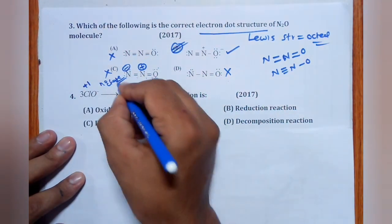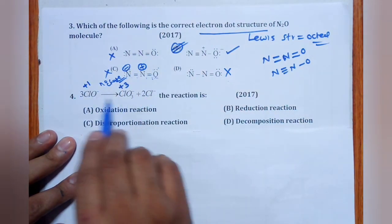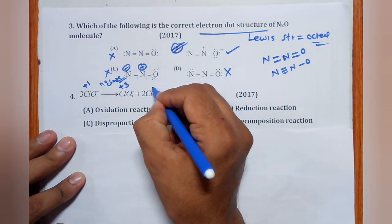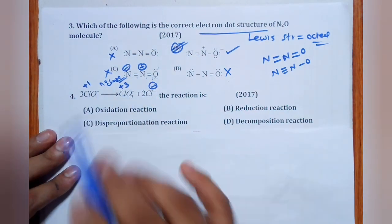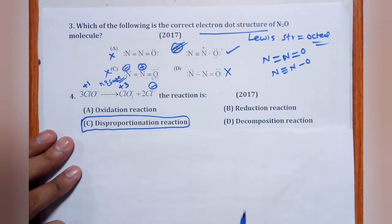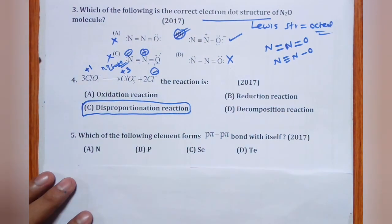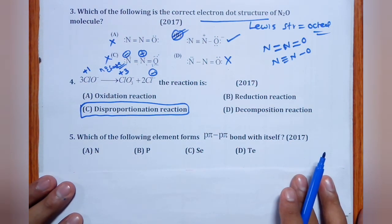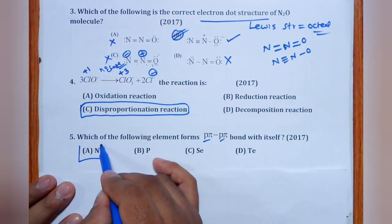Question 4 (2017): 3ClO− → ClO3− + 2Cl−. Oxidation states: Cl is +1 in ClO−; becomes +3 in ClO3− (oxidation) and −1 in Cl− (reduction). Since the same element undergoes both oxidation and reduction, this is a disproportionation reaction.